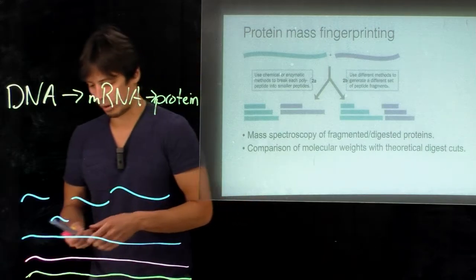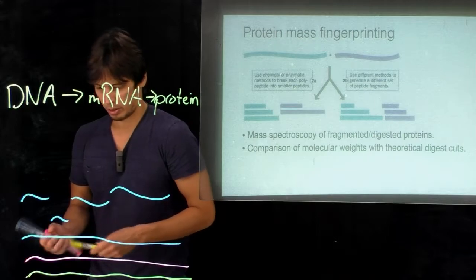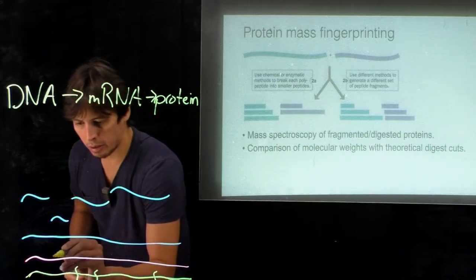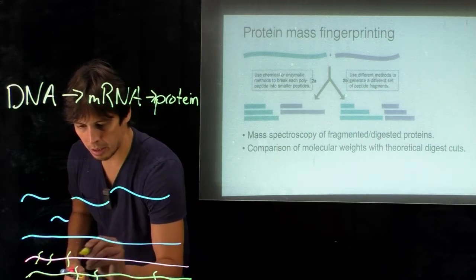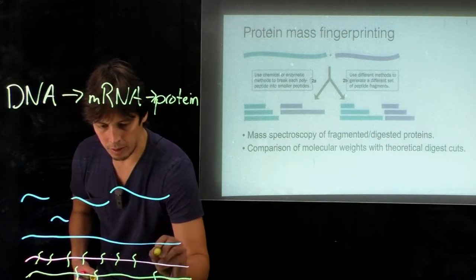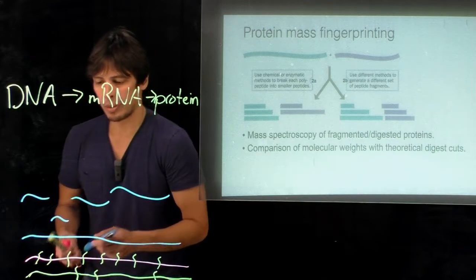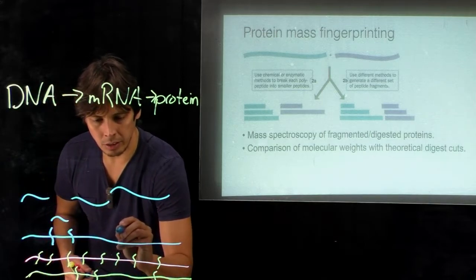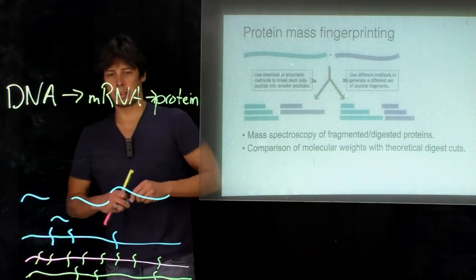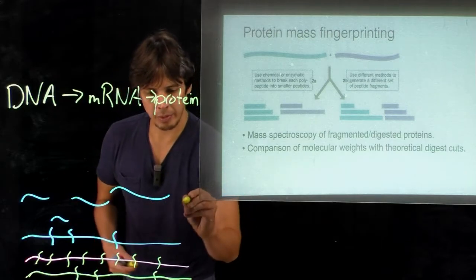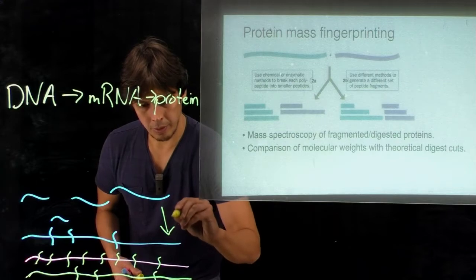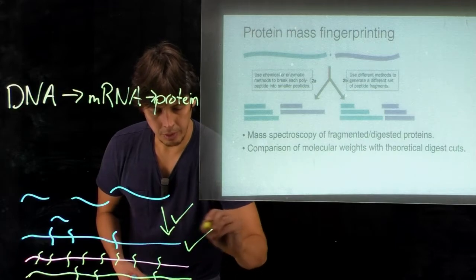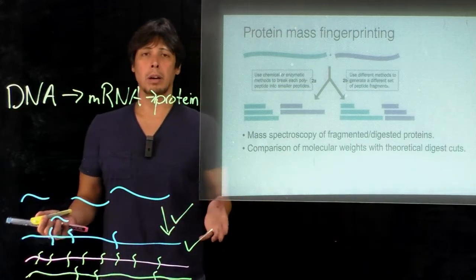And so what we look for then are places where the cleavage sites are consistent with the fragments that we got, and that the masses of these cleavage sites are consistent with the fragments we got. And so ones that match up give us the identity of the protein and the sequence of the entire peptide.